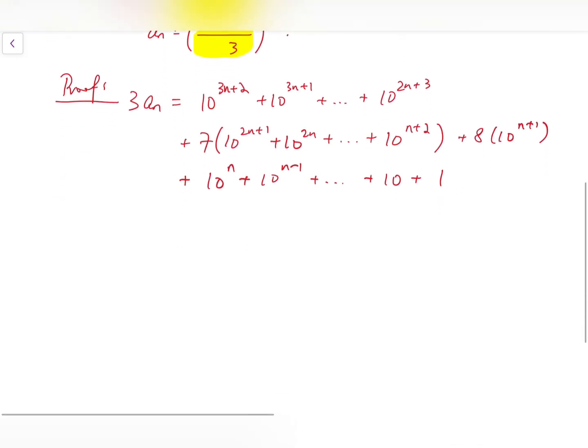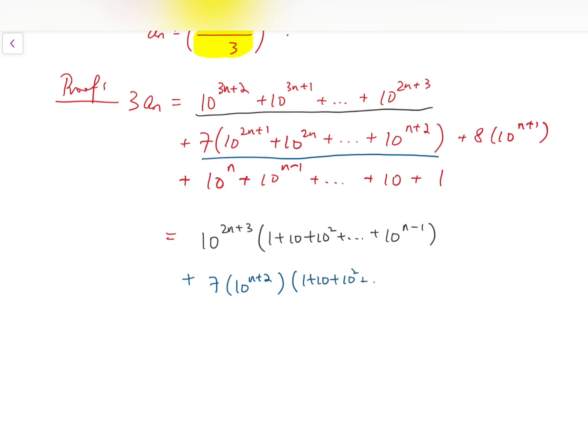Then we can start simplifying block by block. Indeed, for the first block underlined in black, I can take out 10 to the power 2n plus 3, so it's 1 plus 10 plus 10 squared all the way up to 10 to the power n minus 1, n terms. And then next block is the blue block, which is 7 times 10 to the power n plus 2, times 1 plus 10, 10 squared, all the way up to 10 to the power n minus 1. Again, n terms. And then just an extra 8 times 10 to the power n plus 1 next to it. Don't forget the single term.